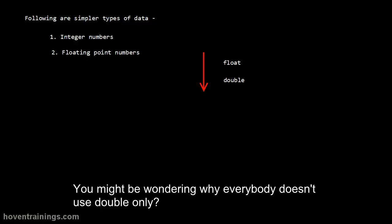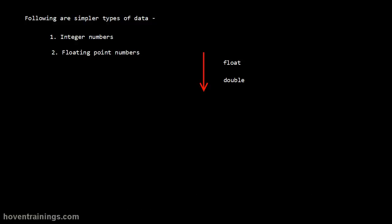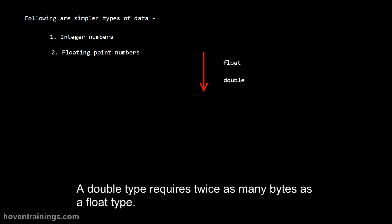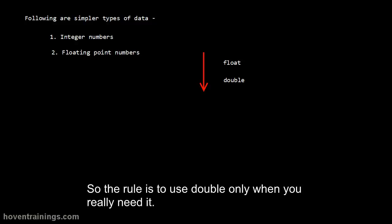You might be wondering why everybody doesn't use double only. It can handle both lower and higher precisions. The answer is that higher capability comes at the cost of higher memory. A double type requires twice as many bytes as a float type. So the rule is to use double only when you really need it.